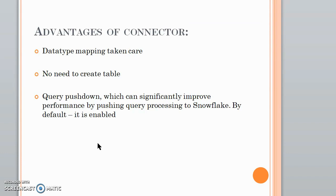The second advantage is query pushdown, which is enabled by default. This can significantly improve performance by pushing query processing to Snowflake. When Spark uses Snowflake as a data source and runs a complex query, it checks if the query can run faster in Snowflake than in Spark, and if so, pushes the query down. This only happens when Snowflake is acting as a data source. Also, without the connector, you would need to manually create a staging area, define file formats, and issue a COPY command — all of these manual steps are eliminated by the Spark Snowflake connector.